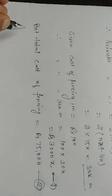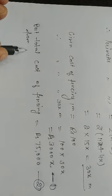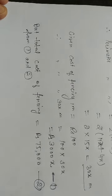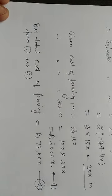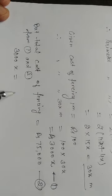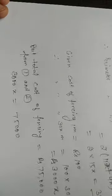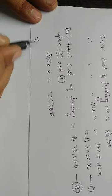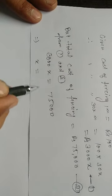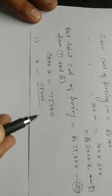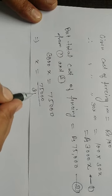From equations 1 and 2, 3000x is equal to 75,000. That implies x is equal to 75,000 upon 3000, which gives x is equal to 25.